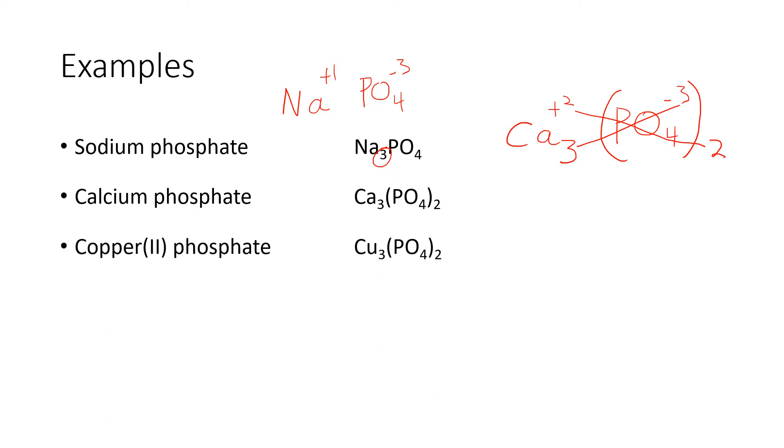And we can do the same thing with copper 2, which has the variable charge metal. And so, copper 2 has a Cu with a plus 2. Phosphate is PO4 with a minus 3. Since the charges don't cancel out, we'll crisscross. And we have to put parentheses around the phosphate when we need more than one of them.